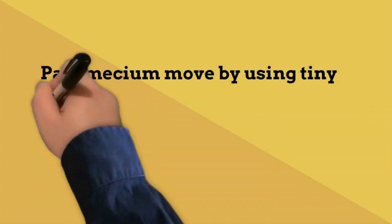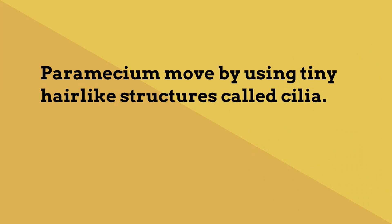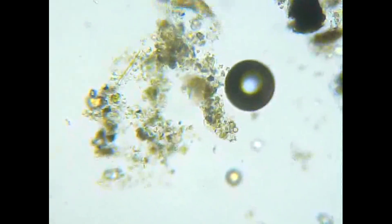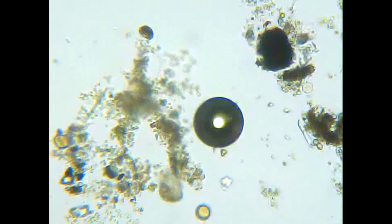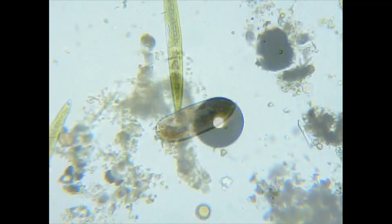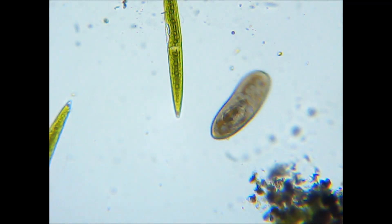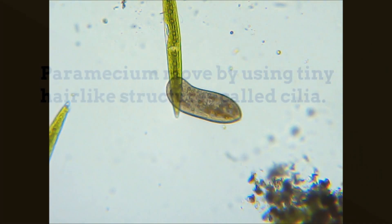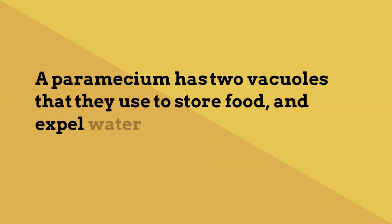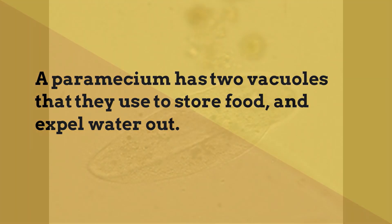Paramecium, on the other hand, move by using tiny hair-like structures. A paramecium has two vacuoles that they use to store food and expel water out.